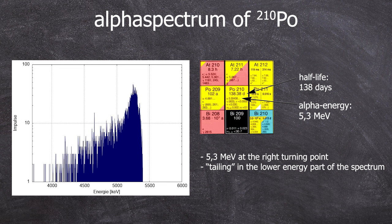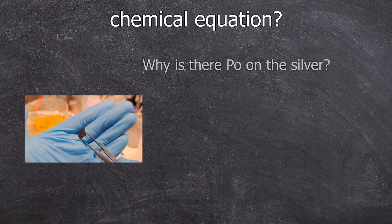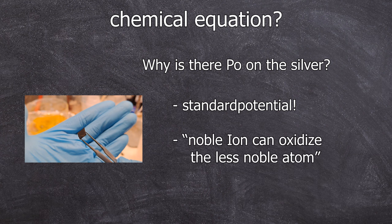So now that we have demonstrated how to extract the polonium-210 on the silver sheet, we now have to answer the question, why is it possible? That's actually a quite interesting question and I can only answer it partially because we are not exactly sure, but that's our best guess. It's all about the standard potentials. Something we learned about in school. The noble ion can oxidize the less noble metal to deposit itself as a metal on the surface.